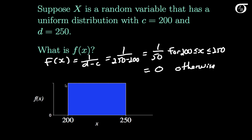Visually, this height here we just found to be 1 over 50, and that makes sure the area under the entire curve is 1. Outside of 200 to 250, f of x drops down to 0.